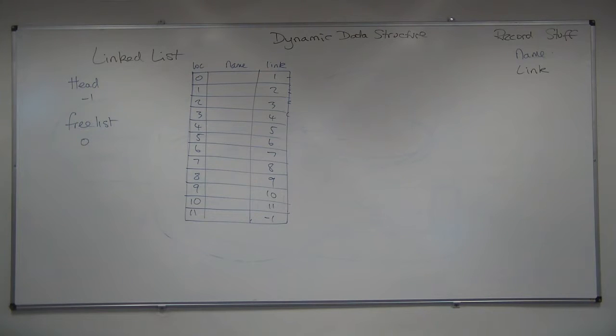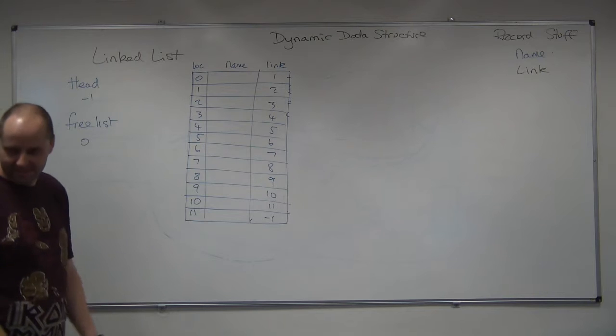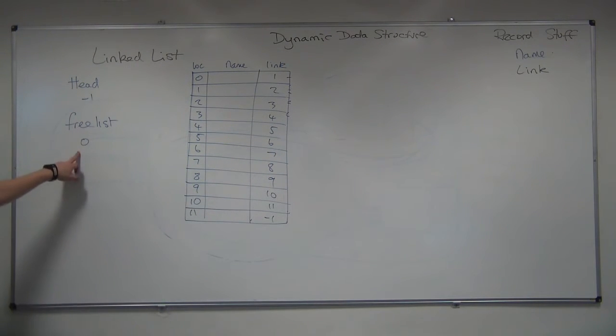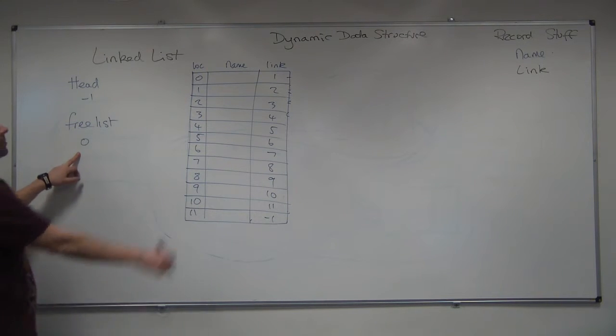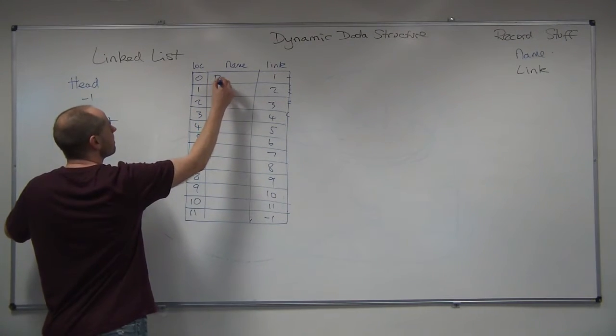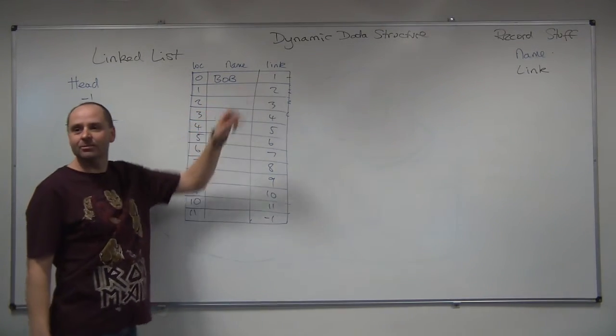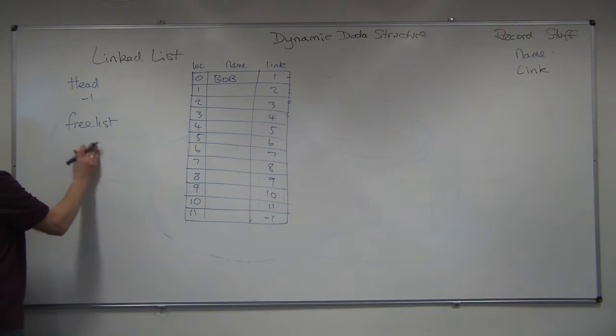Right, so I'm going to add something. Someone give me a name. Bob, I'll add Bob. I need somewhere to store Bob, so I'll look up the free list and I'll put Bob in at that position. That space is no longer free. Where is the next free space? 1. Because the link says position 1. So we alter that.